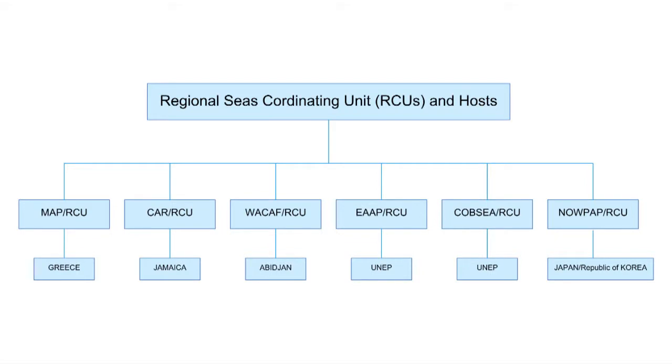These action plans were adopted by member states. Six of them are managed directly by UNEP, and they have established an institutional arrangement to monitor implementation of those action plans — and later the conventions and protocols. This institutional arrangement is referred to as regional coordinating units, which serve as secretariats for the regional seas. UNEP manages six of them: four for the legally binding instruments — East Africa, the Mediterranean, the Caribbean, and West Africa — plus two for the Northwest Pacific and Southeast Asia action plans, which are administered by UNEP but hosted by countries in different locations.